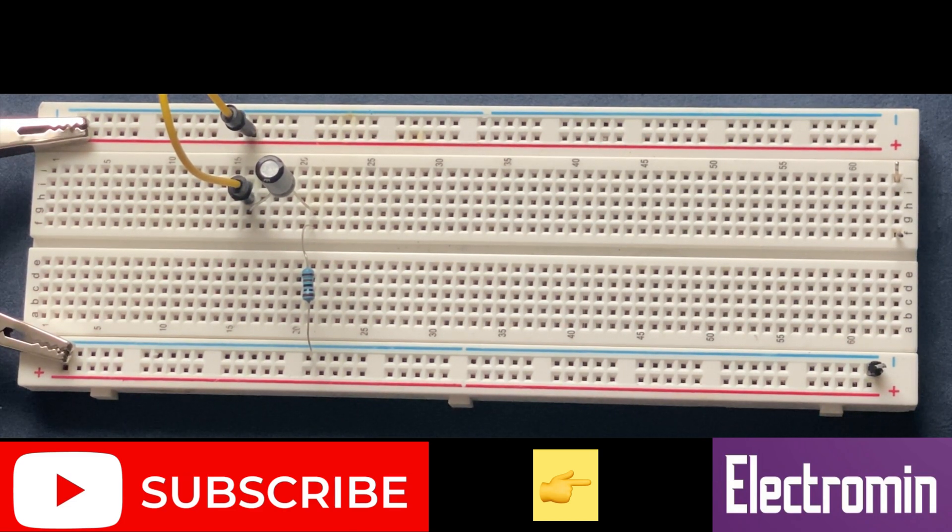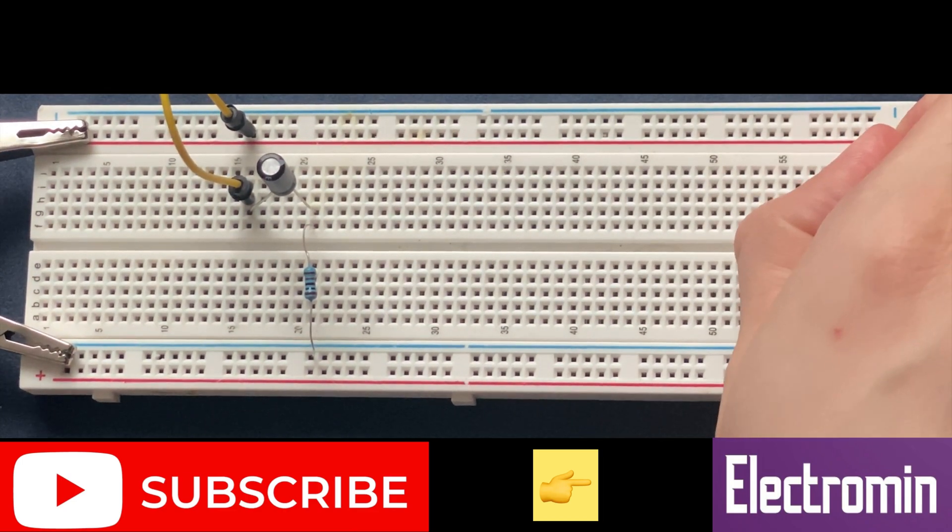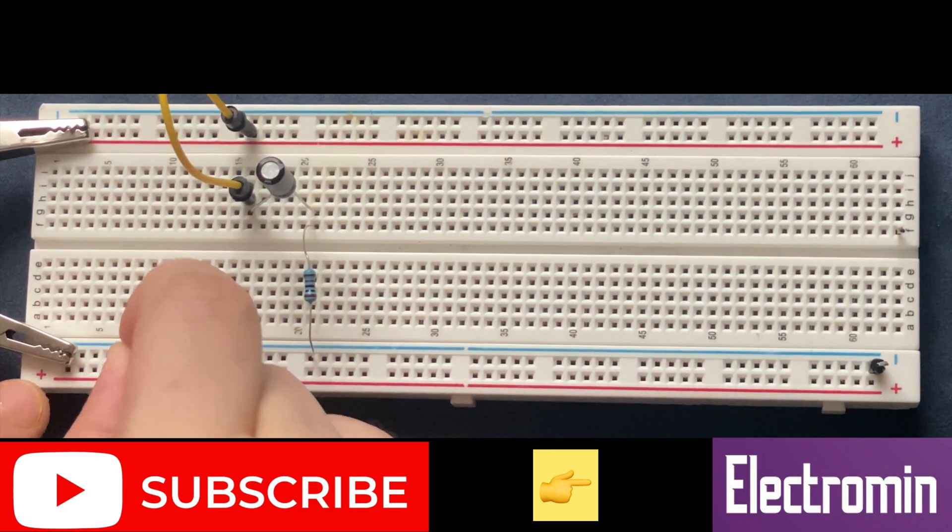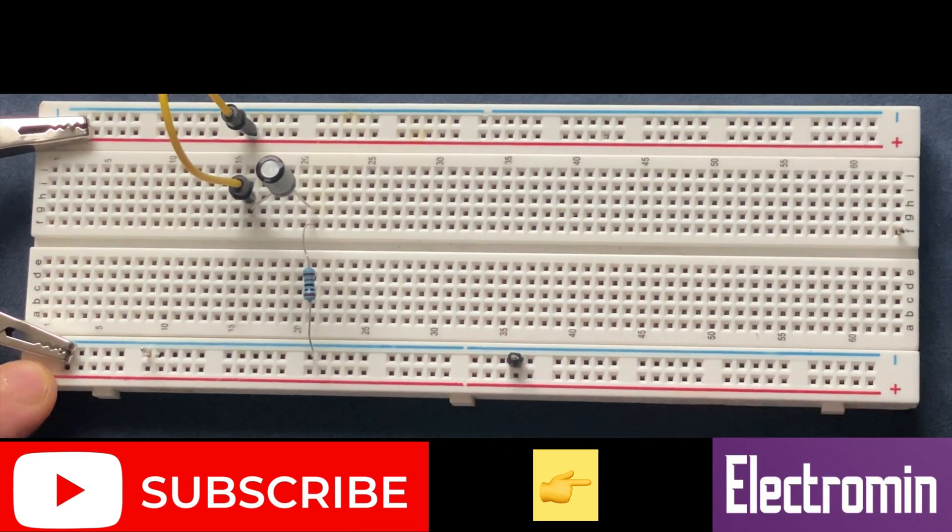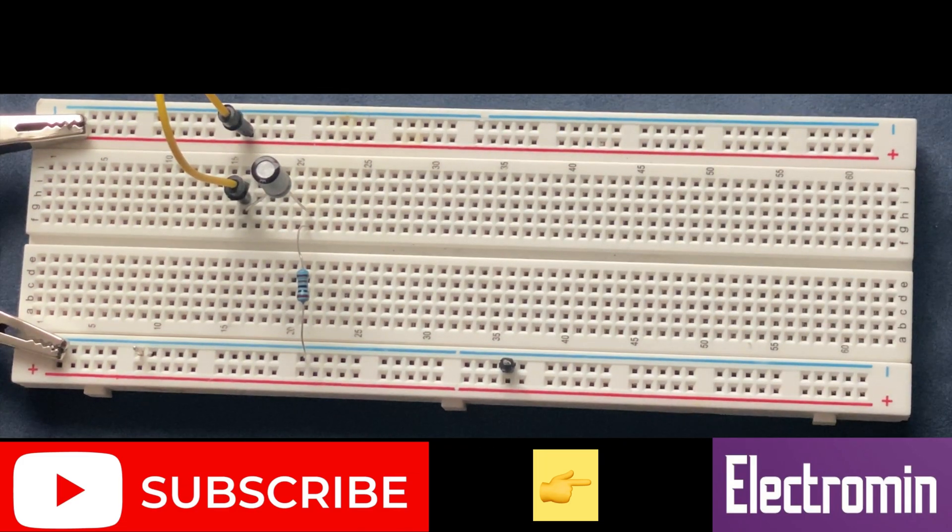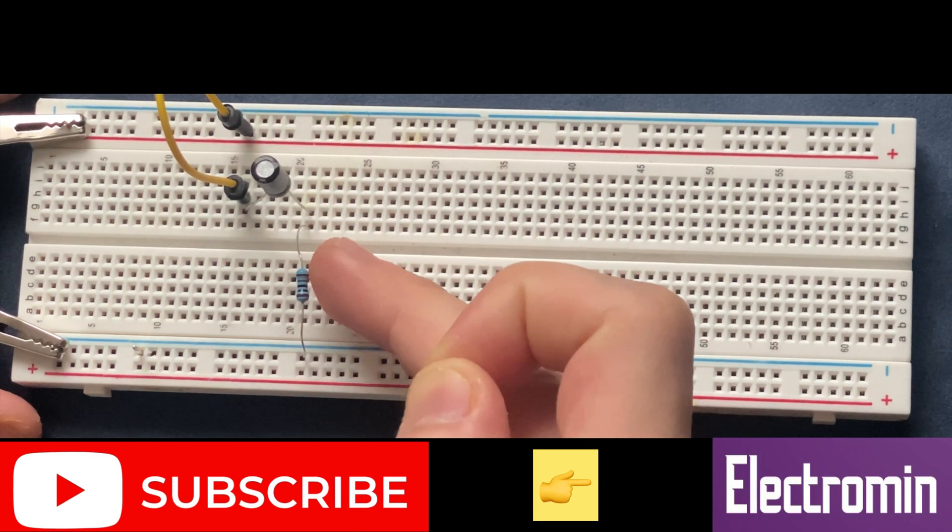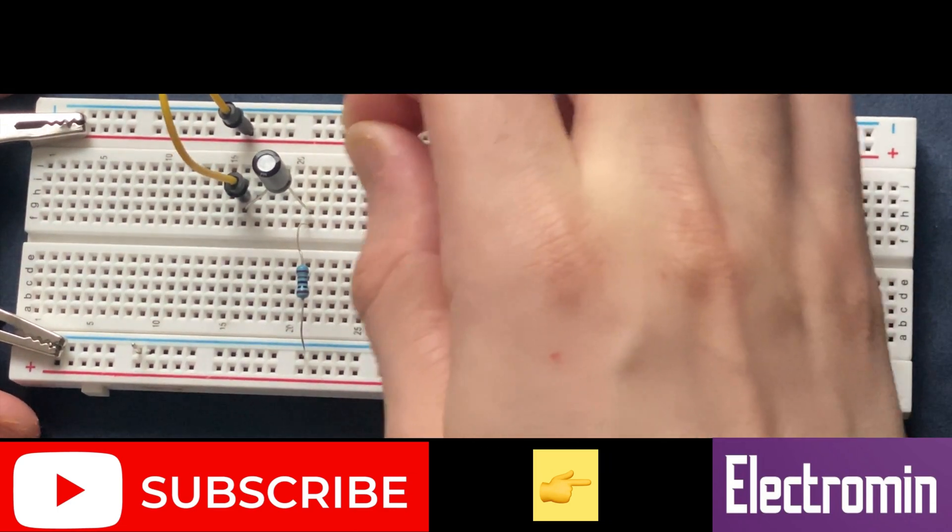Let's connect some breadboard pins to the circuit so we can get the input and output signals on the oscilloscope. One pin is for the input signal. For output, I'll use one pin for ground and another between the node of the capacitor and resistor so we can see the output signal on the oscilloscope.